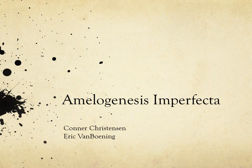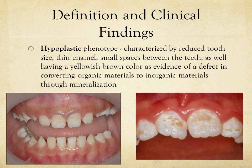This is a presentation on Amelogenesis Imperfecta by Connor Christensen and Eric Van Boning. With amelogenesis imperfecta there are three different phenotypes. The first phenotype is hypoplastic, characterized by reduced enamel size.